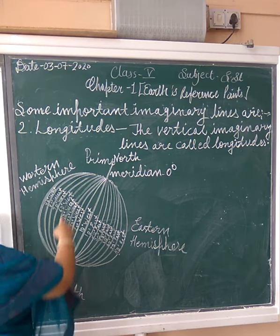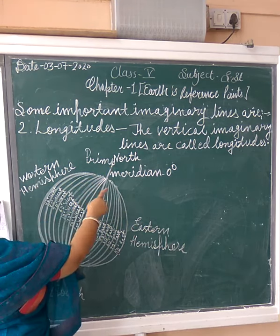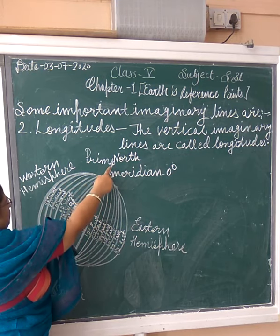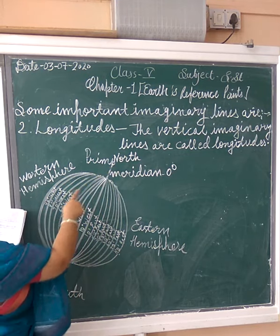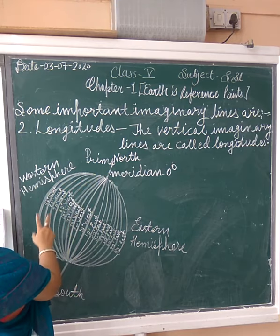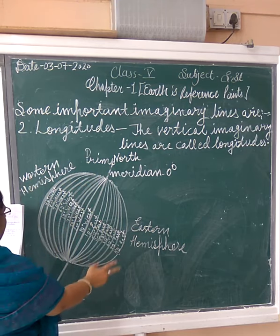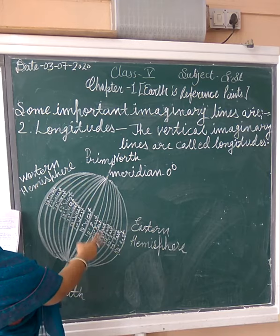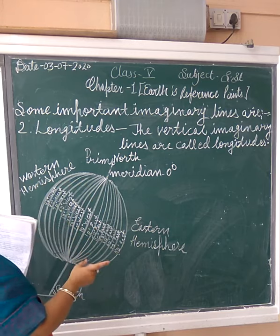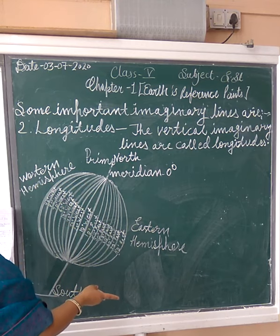Now, the 0 degree longitude is called the Prime Meridian. The Prime Meridian divides the Earth into western hemisphere and eastern hemisphere. The prime meridian divides the Earth into two parts — western hemisphere and eastern hemisphere.